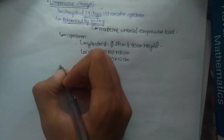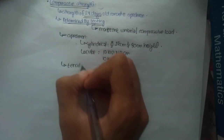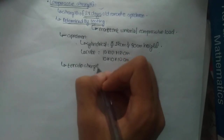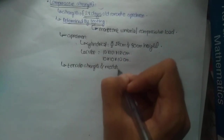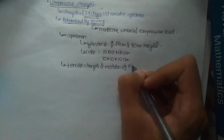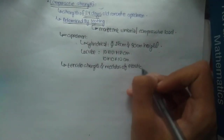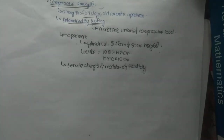Compressive strength is one of the most important properties of any concrete because other properties of concrete, such as tensile strength and modulus of elasticity, are expressed in terms of compressive strength.